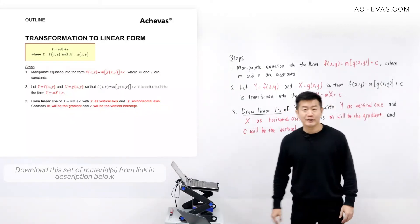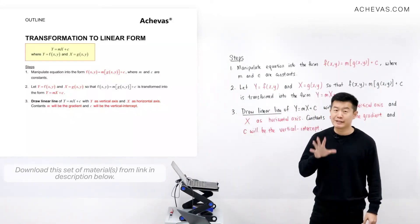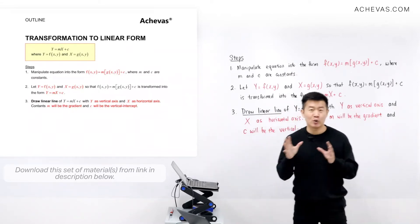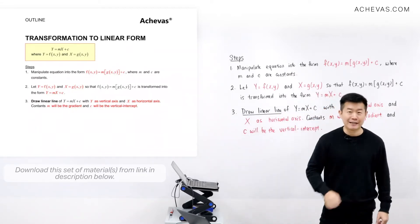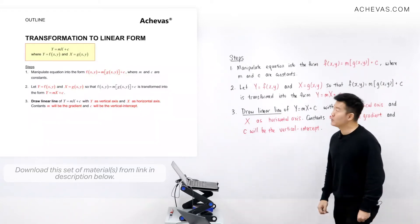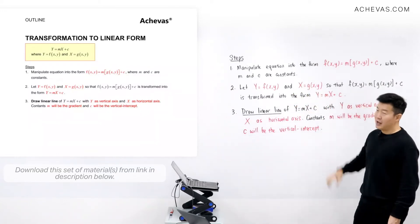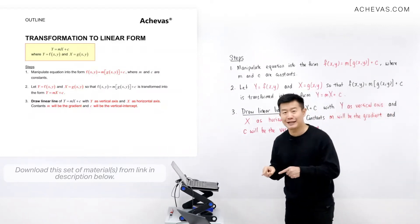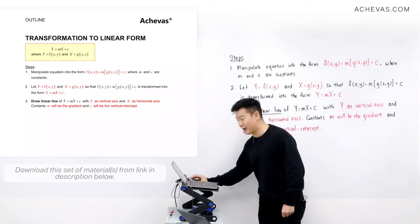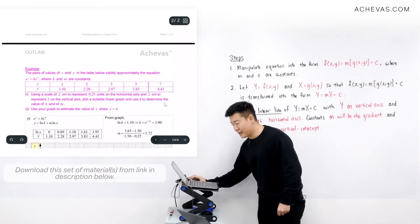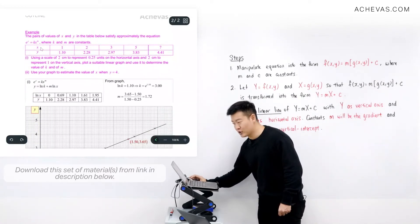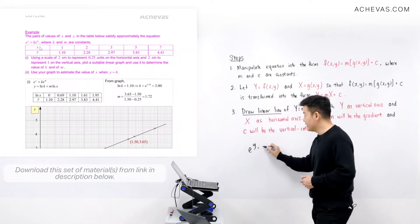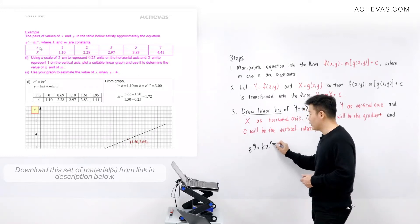What we're going to learn in this chapter will sound a bit far-fetched, because our attempt is to try to process and transform a curve into a linear line on a Cartesian axis. To do that, we are going to make use of these three steps. Let's plunge directly into an example on the second page of your outline. The example presents us with a curve: e to the power of y is equal to kx to the power of m.